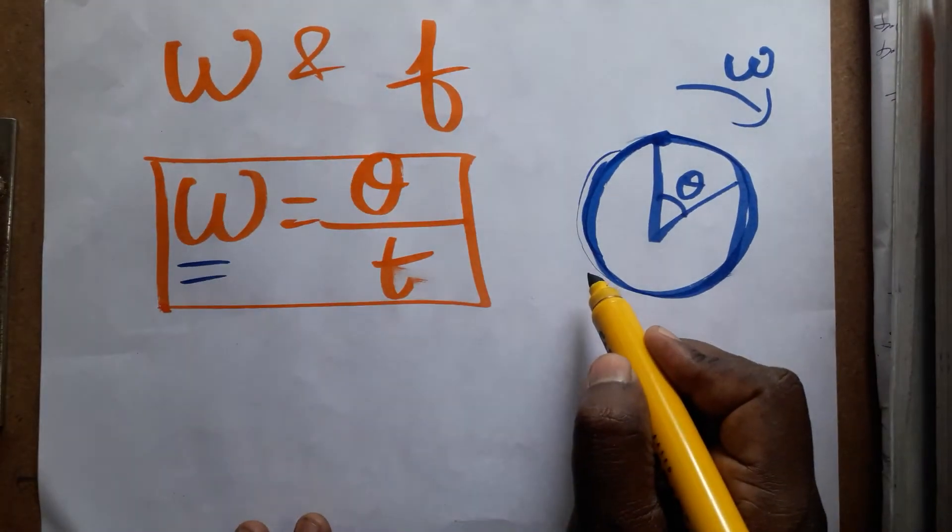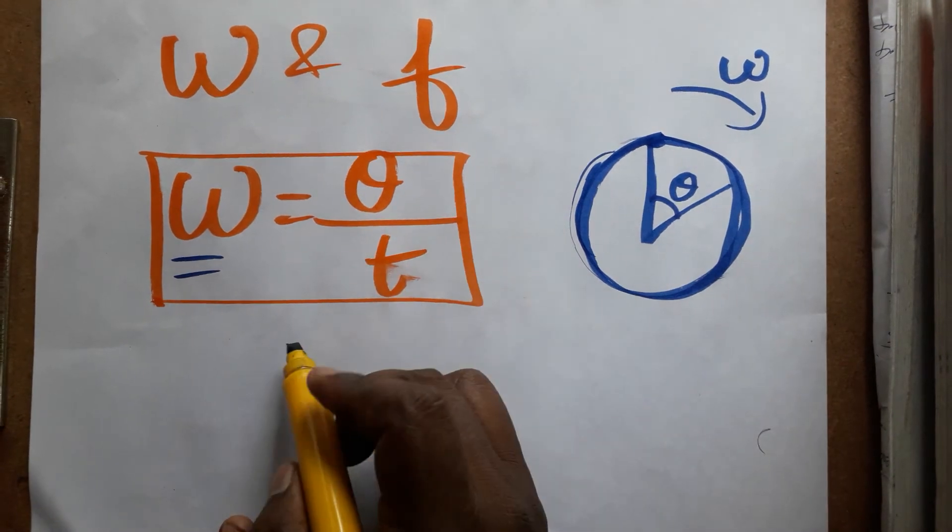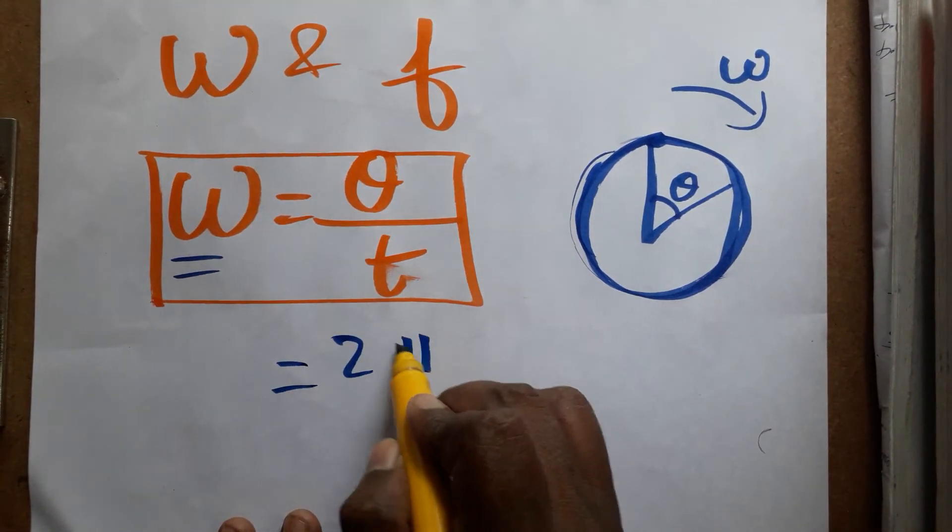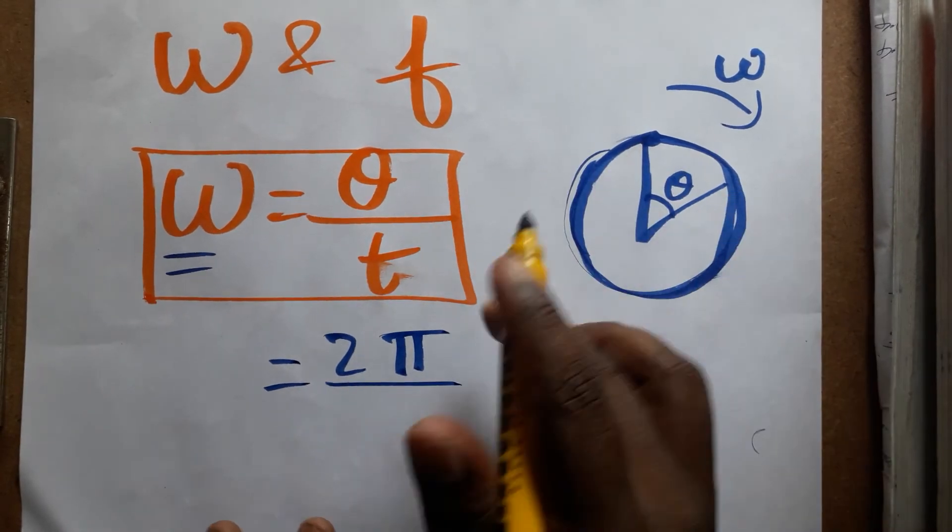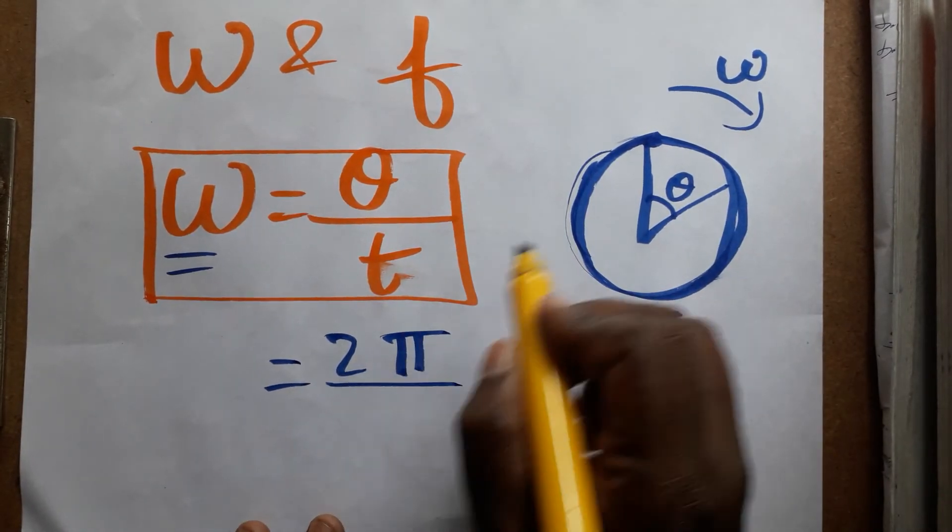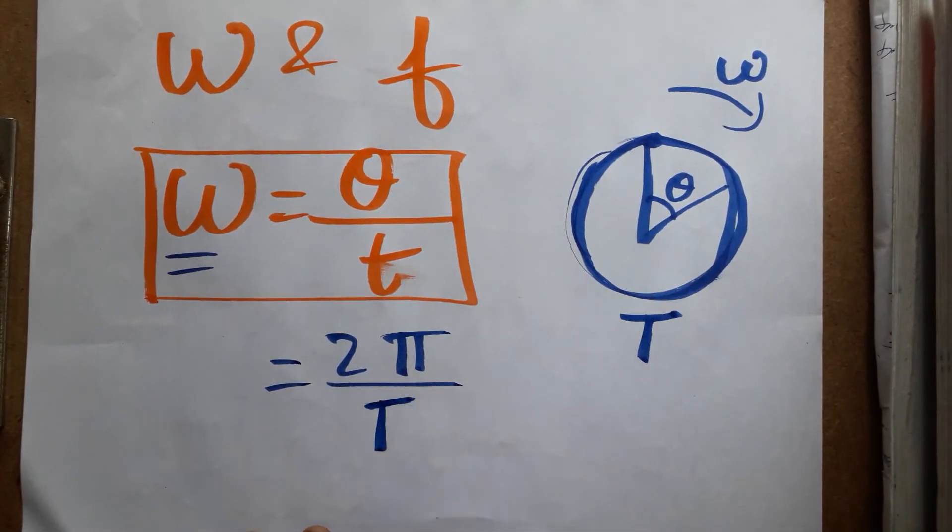theta is going to be 2π (360 degrees), divided by the full time taken. I am taking T as the time taken for complete rotation, capital T.